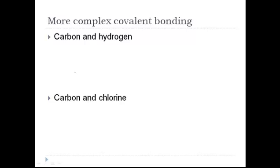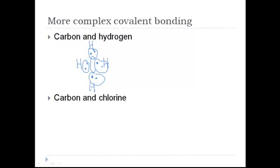This can get much more complicated with lots of covalent bonds. Here are two more complicated examples. Carbon and hydrogen — carbon is in group 14, and it doesn't really make ions easily because it would have to either gain four or lose four, which is really tough. So carbon is a pro at covalent bonding. It's going to bond to four hydrogens and share a pair of electrons with each one. Each hydrogen has two electrons for a full valence shell, and carbon now has two, four, six, eight to have a full valence shell.